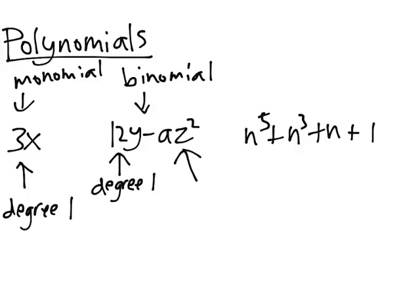But the second term, a times z squared, has degree 3. This is because z is raised to the power 2, and there's an additional variable a. So the 2 from the z and the 1 from the a add up to 3.